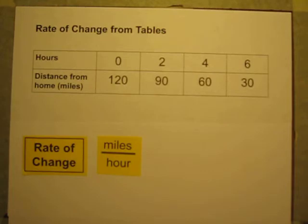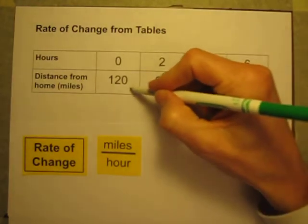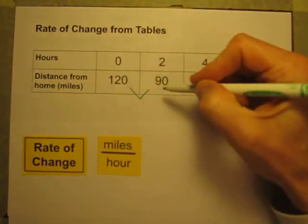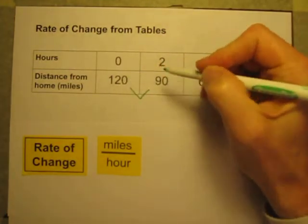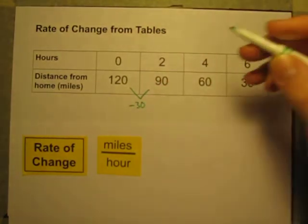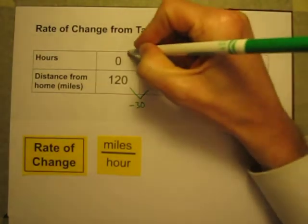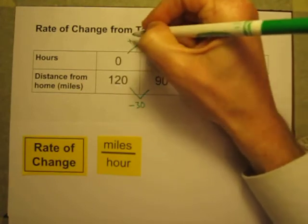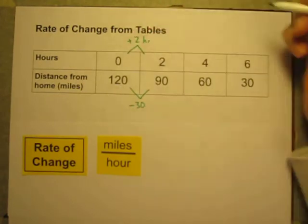So to do that, let's figure out how many miles are traveled in every hour. I can see that the number of miles is going from 120 miles to 90 miles, or it's decreasing by 30 miles. And it decreases 30 miles when I increase the time by 2 hours.